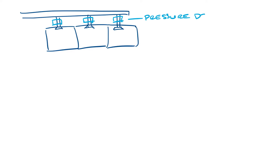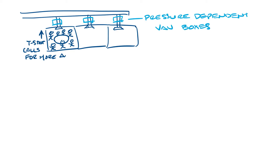Now let's look at pressure dependent VAV boxes. Pressure dependent VAV boxes in an HVAC system work in a similar manner. Let's say we have a conference room and a couple areas with pressure dependent VAV boxes. If the conference room goes from empty to full, the thermostat will tell it it needs more air and it'll call for the box to open the damper for the conference room. The offices on that same system will get less air because opening the damper on the conference room box changed the pressure in the system.